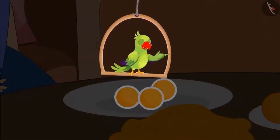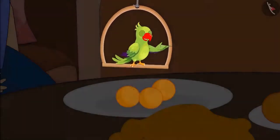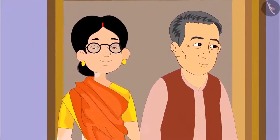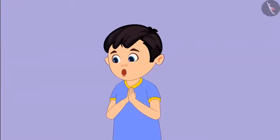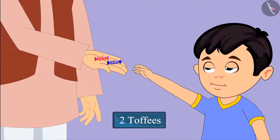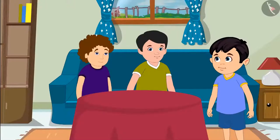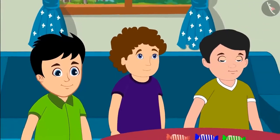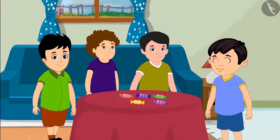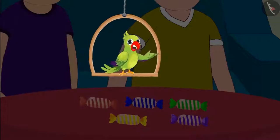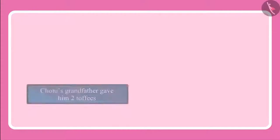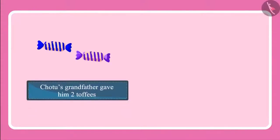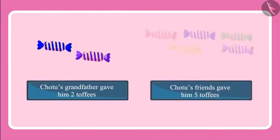It is festival season. Many guests are expected to come to Chotu's house. His grandmother and grandfather reached before everyone else. Hello grandmother, hello grandfather. Chotu's grandfather gave him two toffees. After some time, some of Chotu's friends also arrived. Chotu's friends also brought some toffees for Chotu — they gave Chotu five toffees.